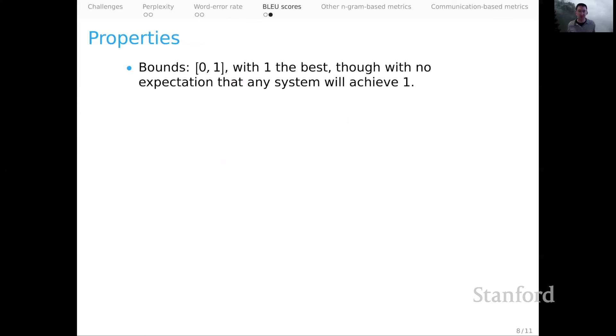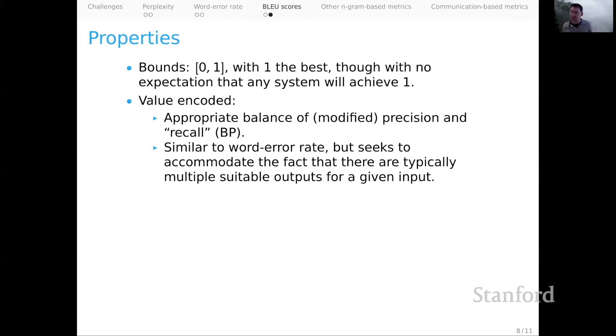So that's the BLEU scoring. What are its properties? Its bounds are zero and one and one is the best, but we have really no expectation that any system will actually achieve one because even comparisons among human translations or human created texts will not have a BLEU score of one. The value encoded is an appropriate balance of modified precision and recall under the guise of that brevity penalty. It's very similar to the word error rate in that sense, but it seeks to accommodate the fact that there are typically multiple suitable outputs for a given input, and that's a real strength of BLEU scoring.